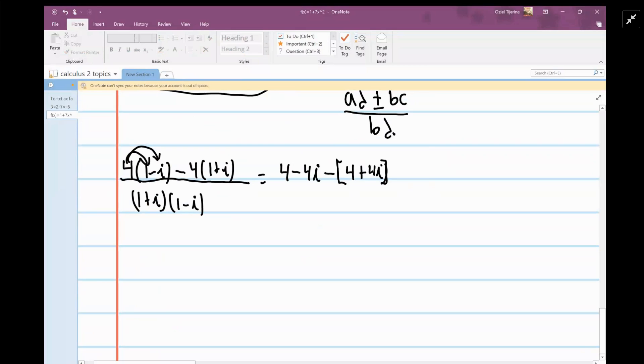Right, and then on the bottom we're going to say 1 minus i squared, because basically, you know, it's 1 minus i squared. 1 plus x times 1 minus x is 1 minus x squared. That's just a rule.